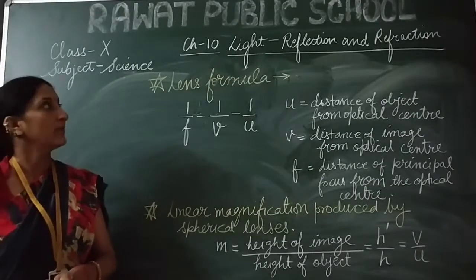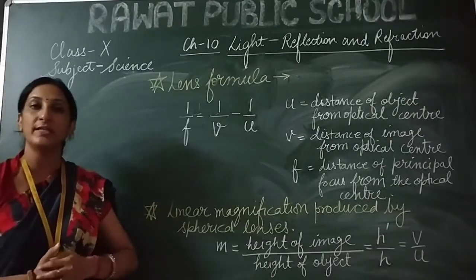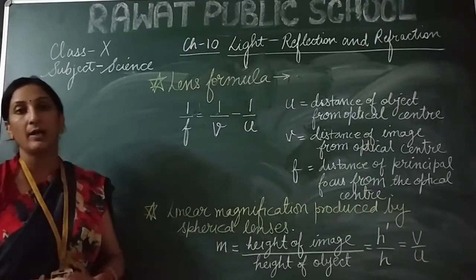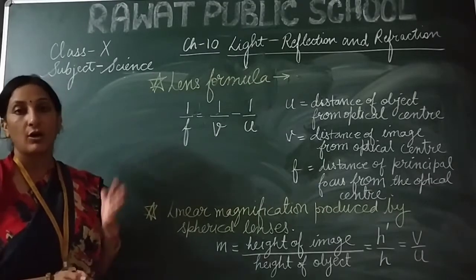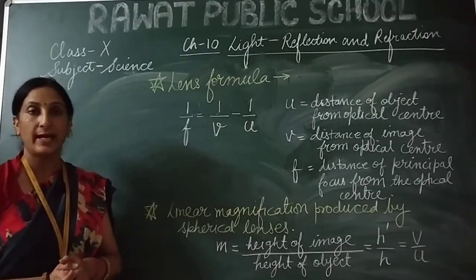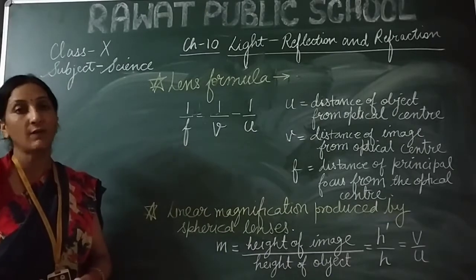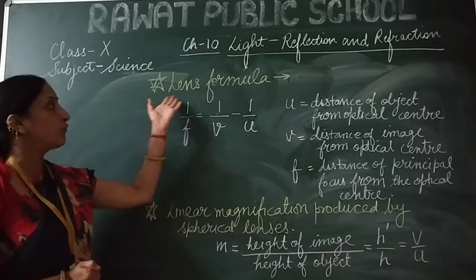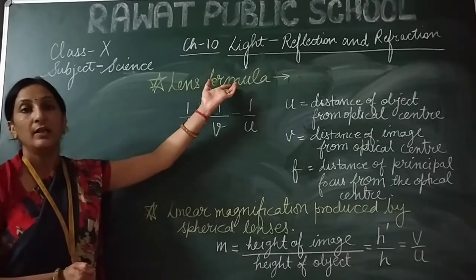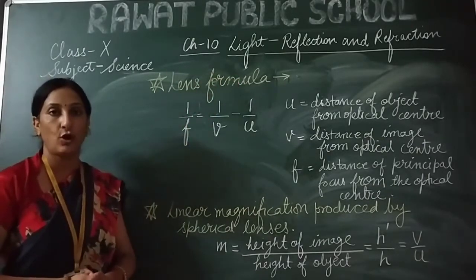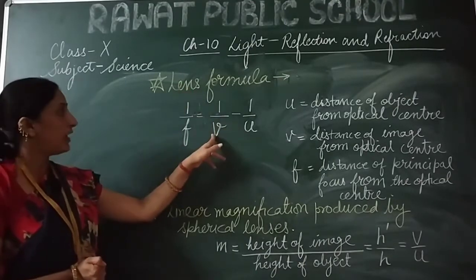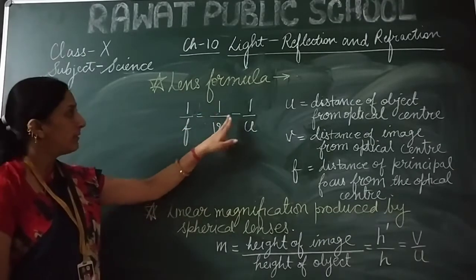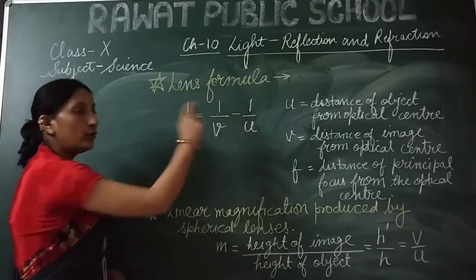Good morning students. Let's start today's lesson with the same chapter: light, reflection and refraction. So far we have studied image formation by concave and convex lenses and the differences between them. Now in today's lesson we are going to study the lens formula, as we studied the mirror formula. The lens formula is: 1/F = 1/V − 1/U.